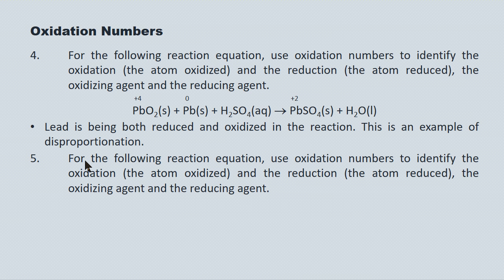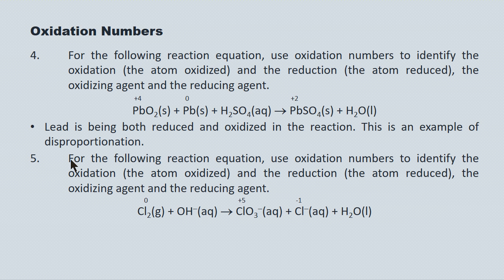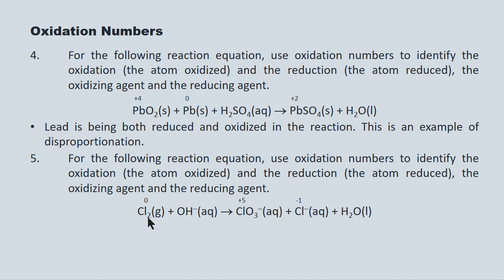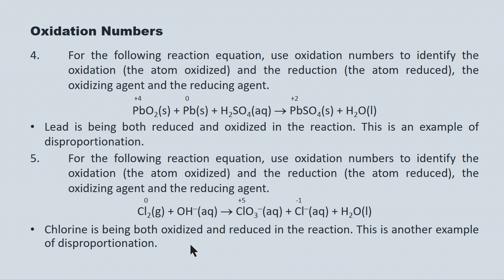For the following reaction, use oxidation numbers to identify the oxidation and reduction. This is another disproportionation reaction. The chlorine in the neutral diatomic molecule Cl2 has an oxidation number of zero. In ClO3 1−, chlorine goes to plus five — it's being oxidized, losing five electrons per atom. In the chloride ion, chlorine goes from zero to minus one — it's gaining one electron per atom, so it's being reduced. Chlorine is both the reducing agent and the oxidizing agent in this disproportionation reaction.